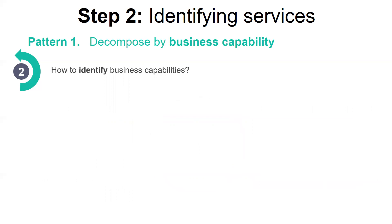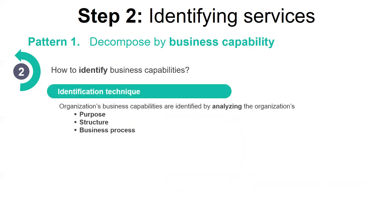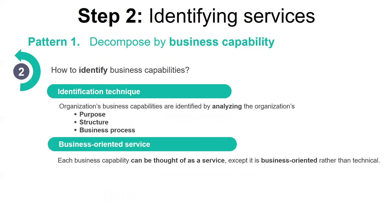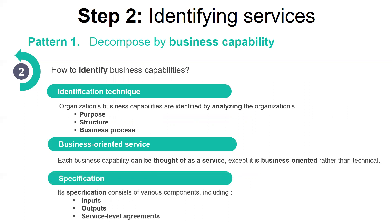An organization's business capabilities are generally identified by analyzing the organization's purpose, structure, and business processes. Each business capability can be seen as a service, except it is business-oriented rather than technical. Its specification consists of various components, including inputs, outputs, and service level agreements.